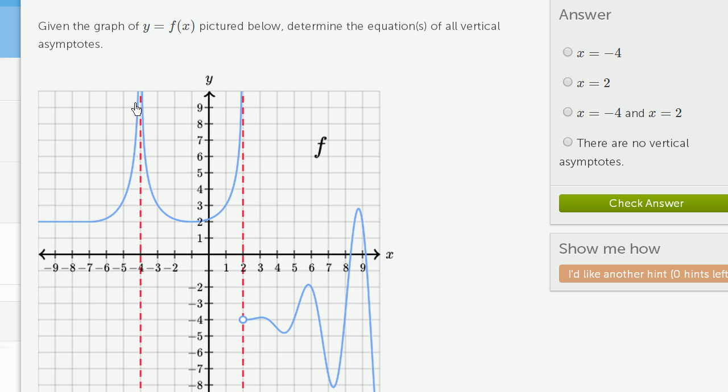Likewise, as we approach x equals negative 4 from the right, it looks like the value of our function goes to infinity. So we definitely have a vertical asymptote at x equals negative 4.